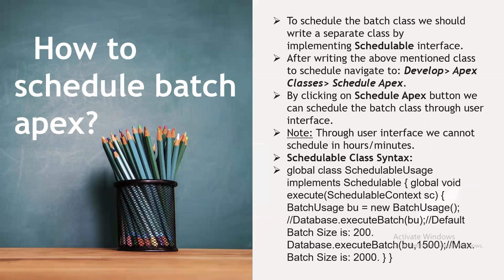To schedule a batch class, we should write a separate class by implementing the Schedulable interface. After writing that class, navigate to Setup, then Apex Classes, and schedule the class from there. By clicking the 'Schedule Apex' button, we can schedule the batch class through the user interface. Note that through the UI, we cannot schedule in hours and minutes. The syntax for a scheduled batch Apex class is: global class ScheduleOne implements Schedulable, with global void execute(SchedulableContext sc), calling new BatchClass() and Database.executeBatch with a batch size of 150 to 2,000.